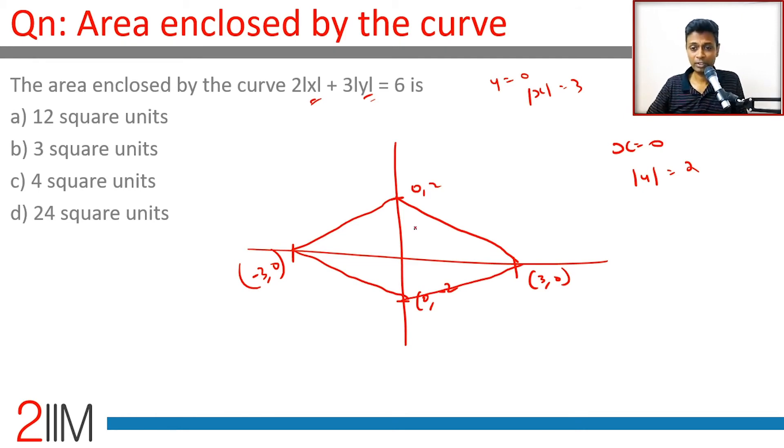We can think of simply finding the area of one of these triangles. Once you find that, multiply by 4 and you're through. This is 90 degrees, this is 3, this is 2. Area is 1/2 × 3 × 2, which is 3 square units for such. 3 × 4 = 12 square units.